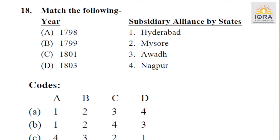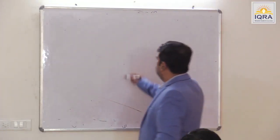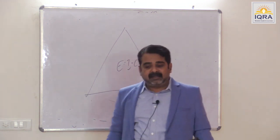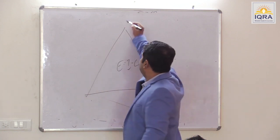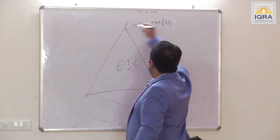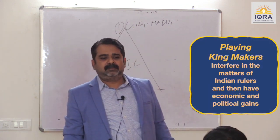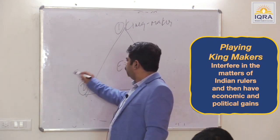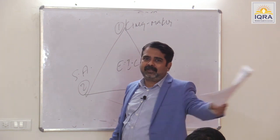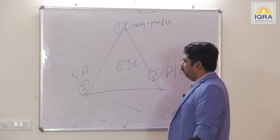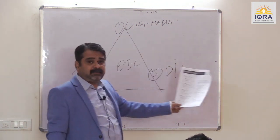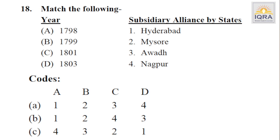Subsidiary Alliance: India was not occupied by army; East India Company occupied India by three formulas. First formula — formula of king maker: interfere in the affairs of Indian rulers and have economic and political gains. Second formula — subsidiary alliance: place all the puppets on local thrones. Third formula — doctrine of lapse. EIC occupied India by these three formulas. Answer is A.